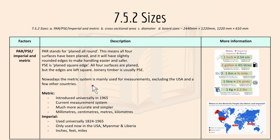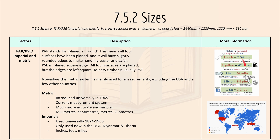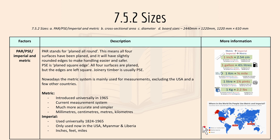Nowadays the metric system is mainly used for measurements, except in the USA and a few other countries. The metric system uses units like cm, litres, kilometres, and kg. Imperial uses units like inches, gallons, miles, and pounds. Here's a map showing where people use metric and imperial.